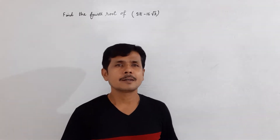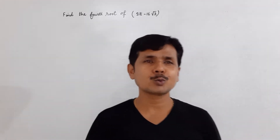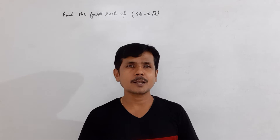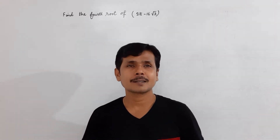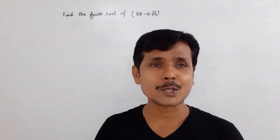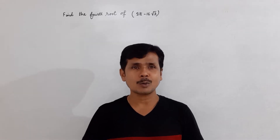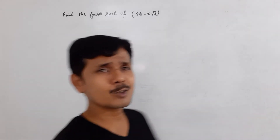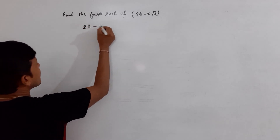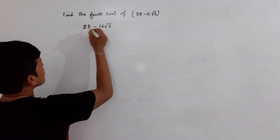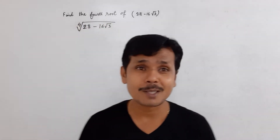Hi everyone, today I am going to teach you all to find the fourth root of an irrational number. For this I have taken a question — hope you will understand it properly. The number is 28 minus 16 times square root of 3, and you have to find the fourth root of this number.